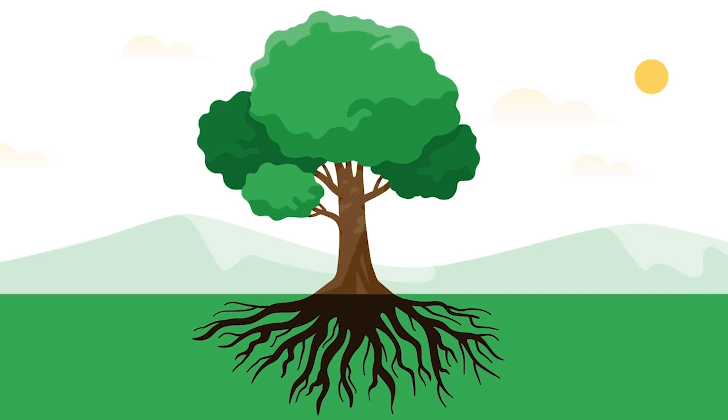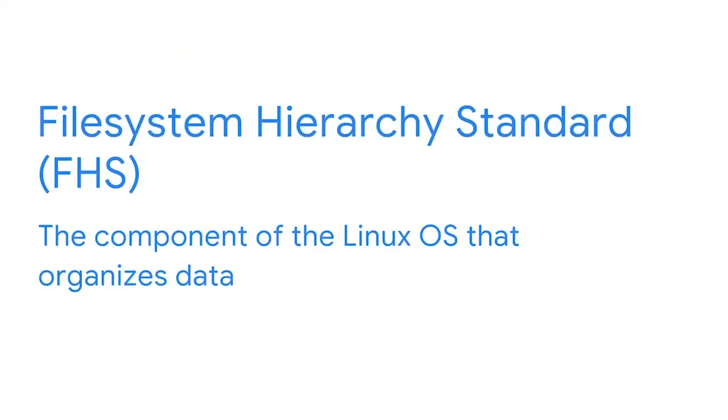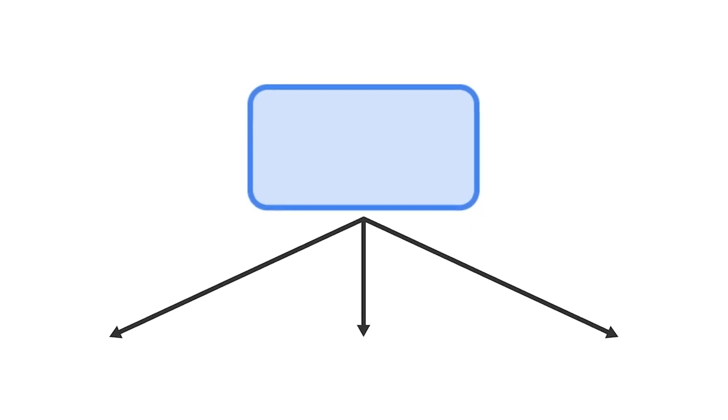Something similar happens when we think about the Linux file system. The File System Hierarchy Standard, or FHS, is the component of the Linux OS that organizes data. This file system is a very important part of Linux because everything we do in Linux is considered a file somewhere in the system's directory. The FHS is a hierarchical system, and just like with the tree, everything grows and branches out from the root.